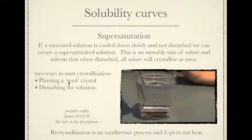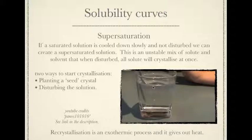There are two ways to start the recrystallization. One is to plant a seed crystal — get another crystal of what your supersaturated solution is and drop that in, and it starts to recrystallize. The other is to simply disturb it, just knock it a little bit or touch it somehow, and you'll see that it all crystallizes out.